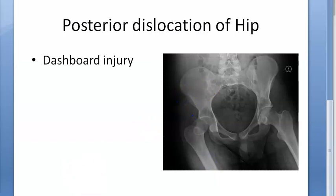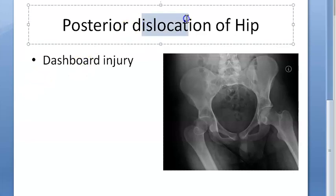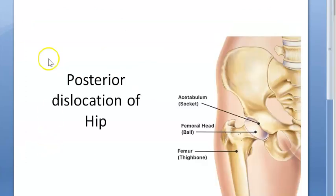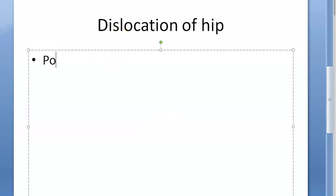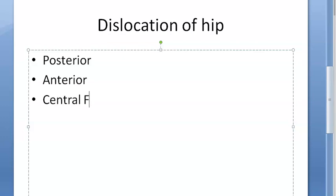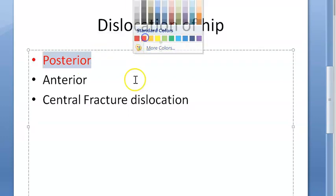This is why it is called dashboard injury. In this, there can not only be dislocation but also an associated fracture, making it a fracture-dislocation. When it comes to hip dislocation, it is not just posterior — there are three types: posterior, anterior, and central fracture-dislocation. In this video, we are looking only at the posterior one, which is more common.